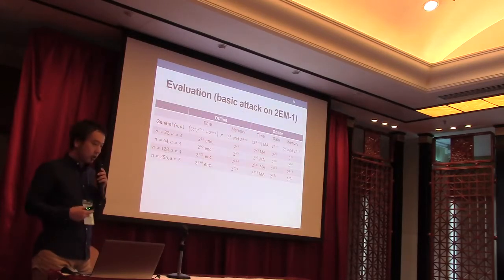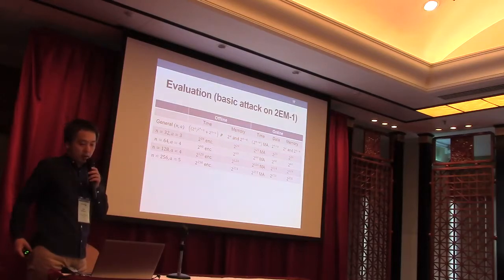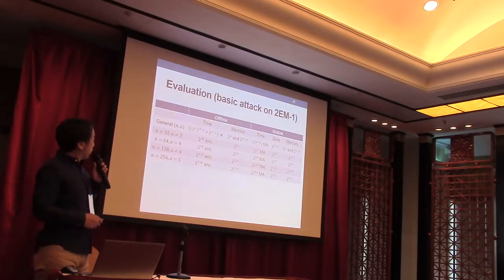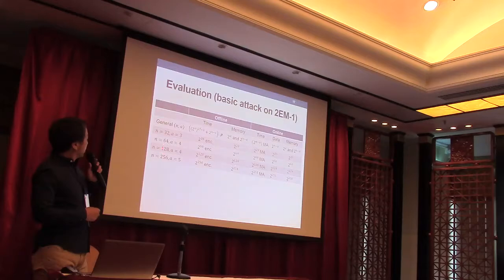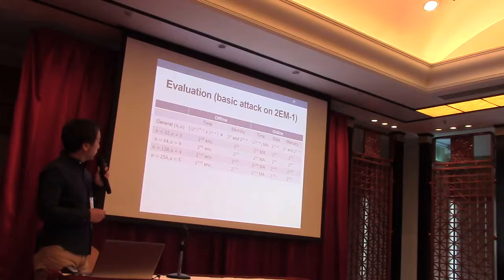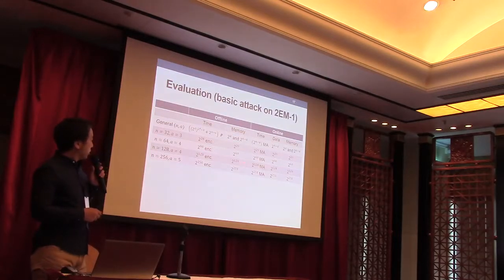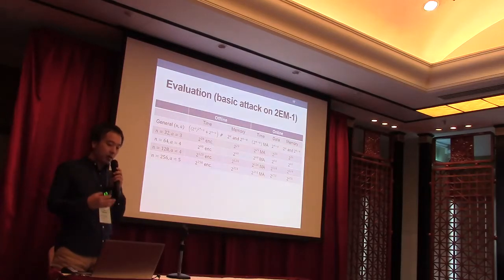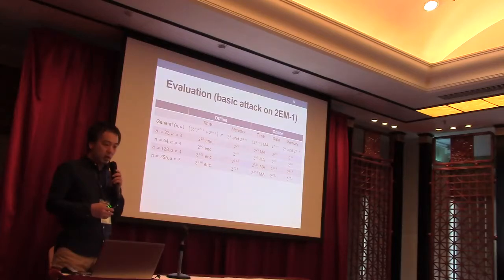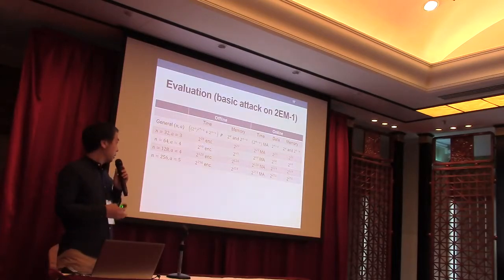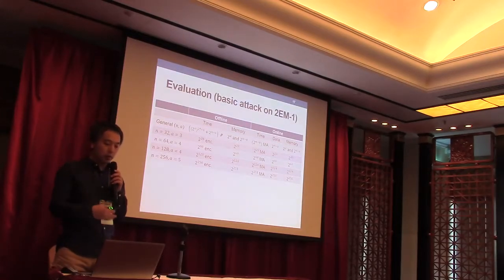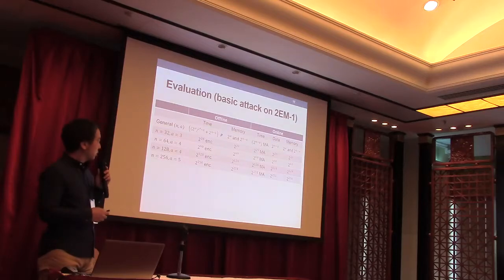So here is a summary evaluation for our basic attack on 2EM1. For example, in the case of n equals 64, we need 2 to the 60 time and 2 to the 60 data. And it is close to 2 to the 64 which is required by brute force attack. So our attack does not seem to be much more efficient than brute force attack. So we propose further improvements.